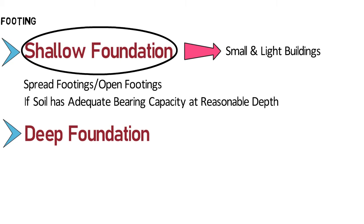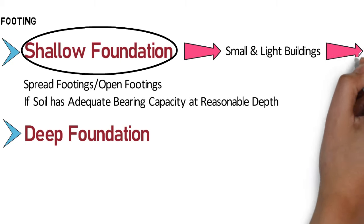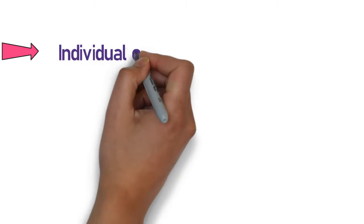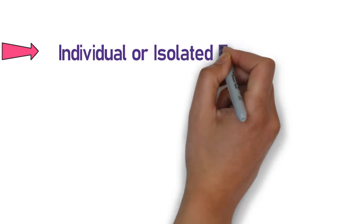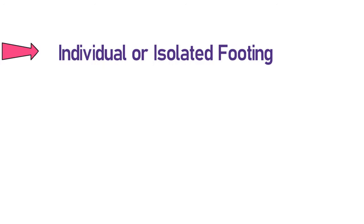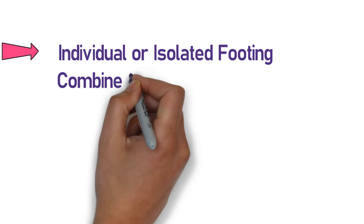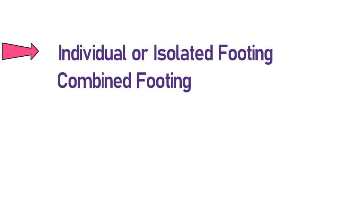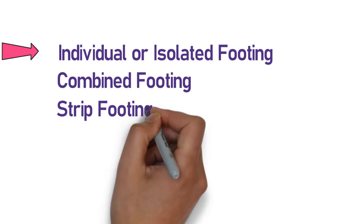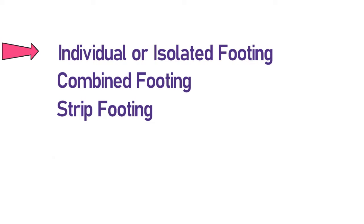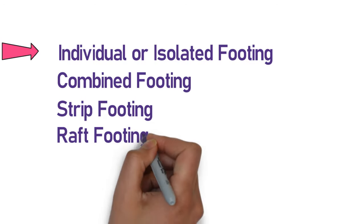In shallow foundations, there are four types: 1. Individual or isolated footing, 2. Combined footing, 3. Strip footing, and 4. Raft footing.